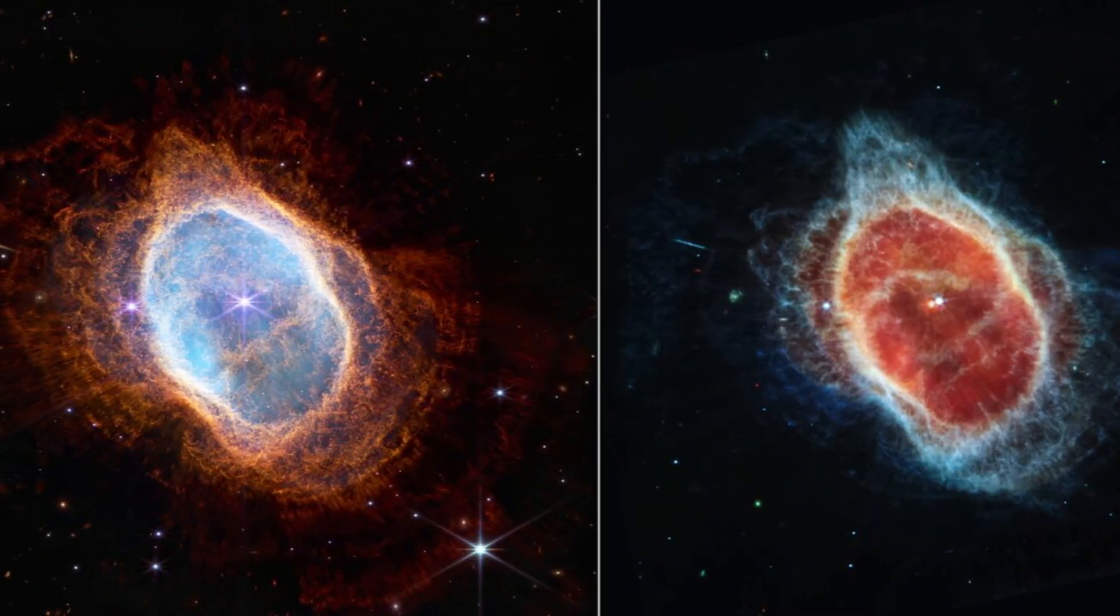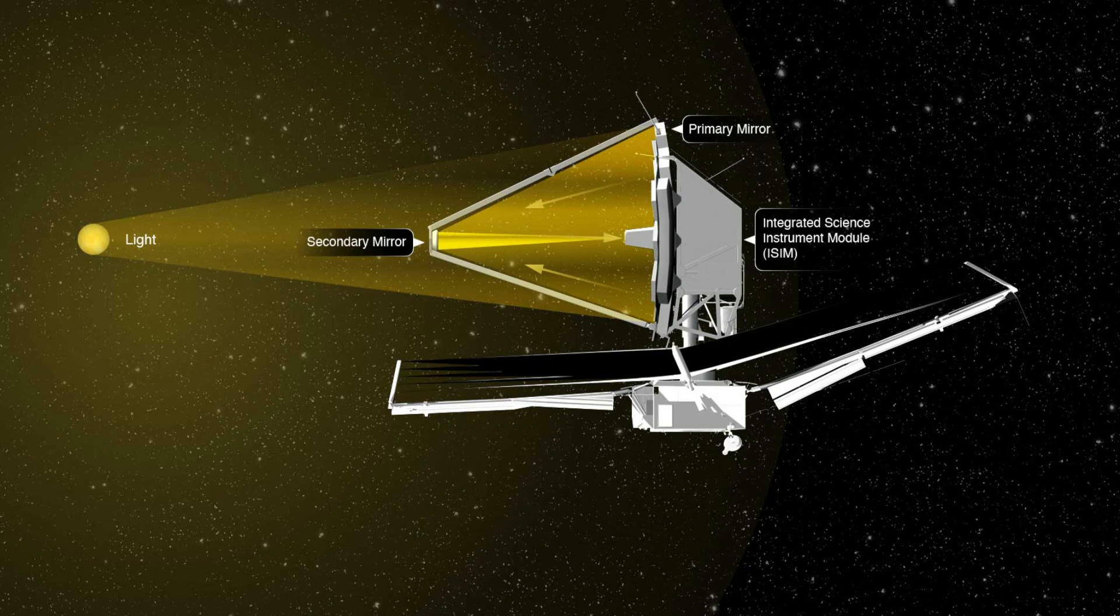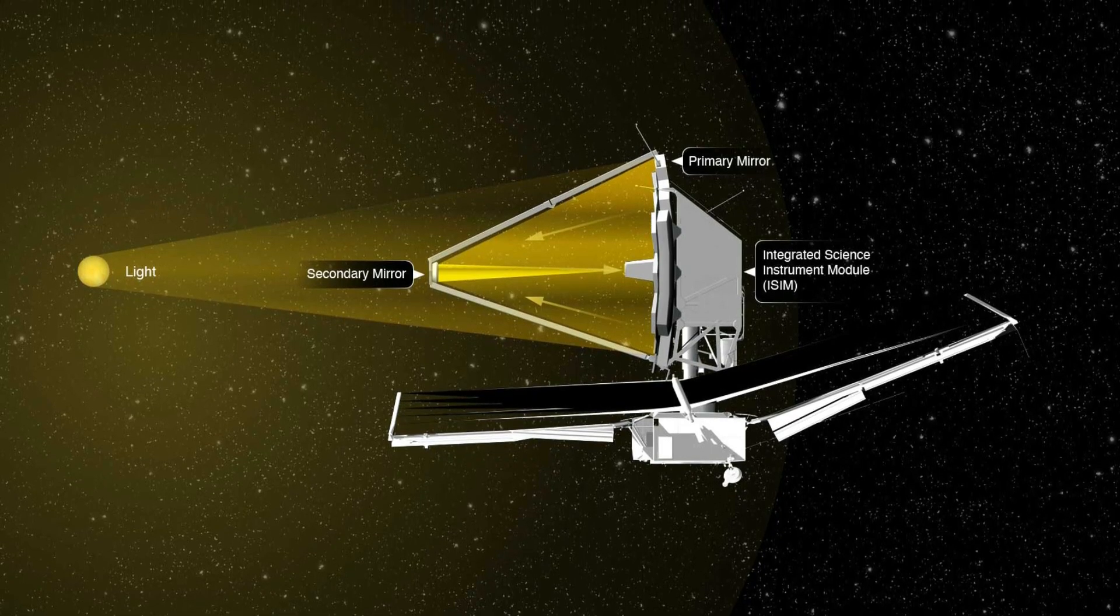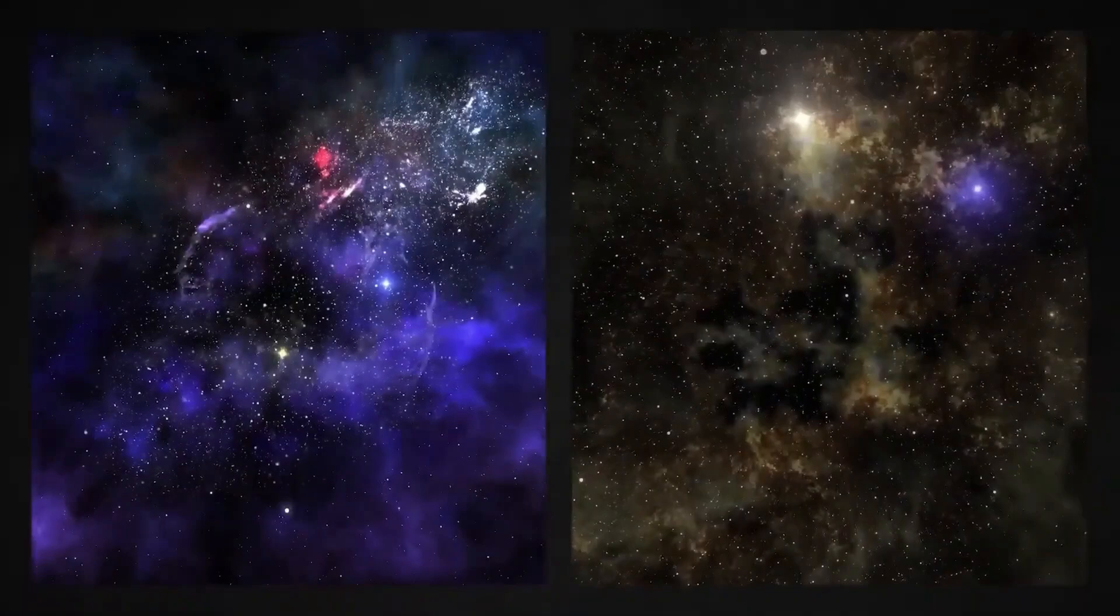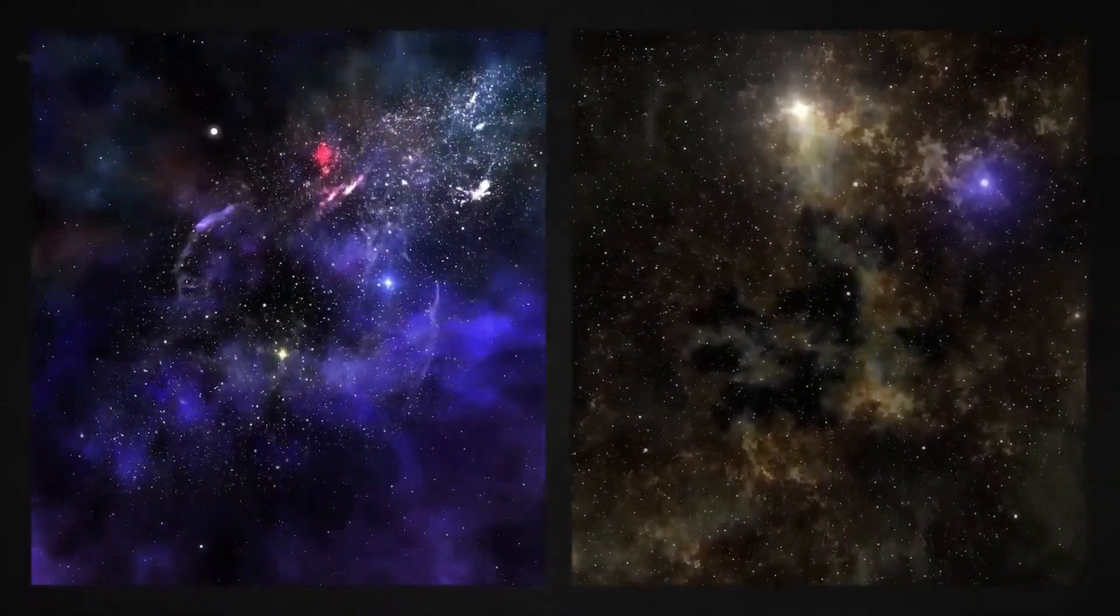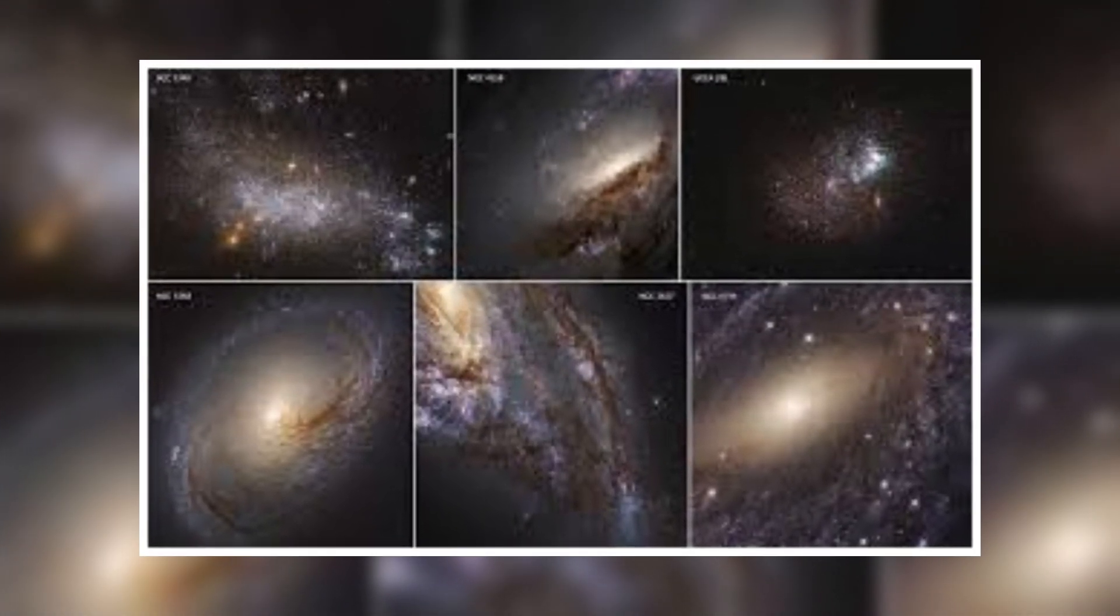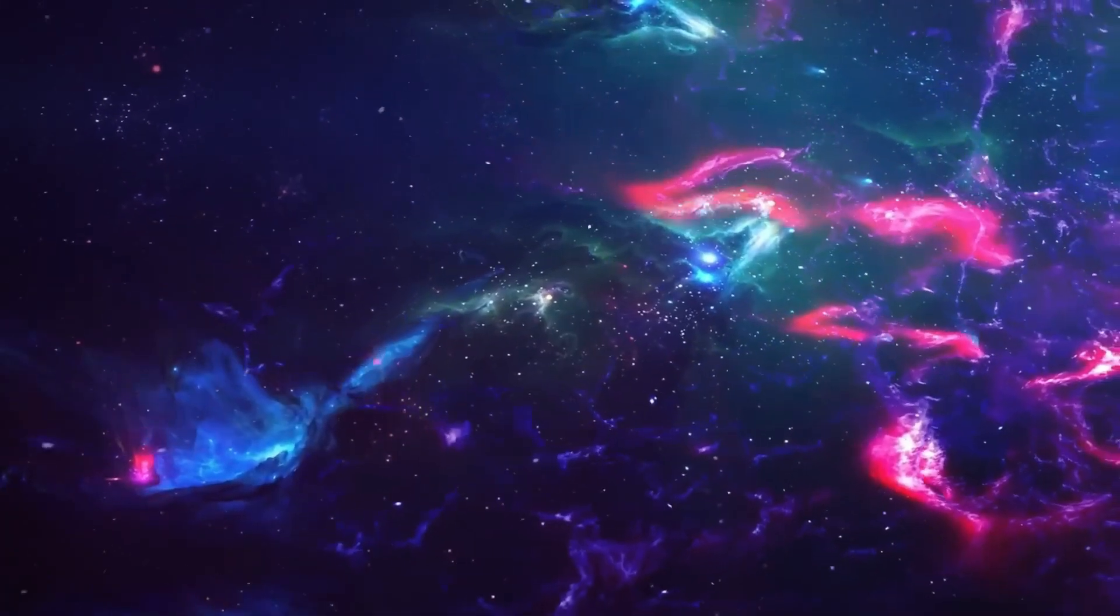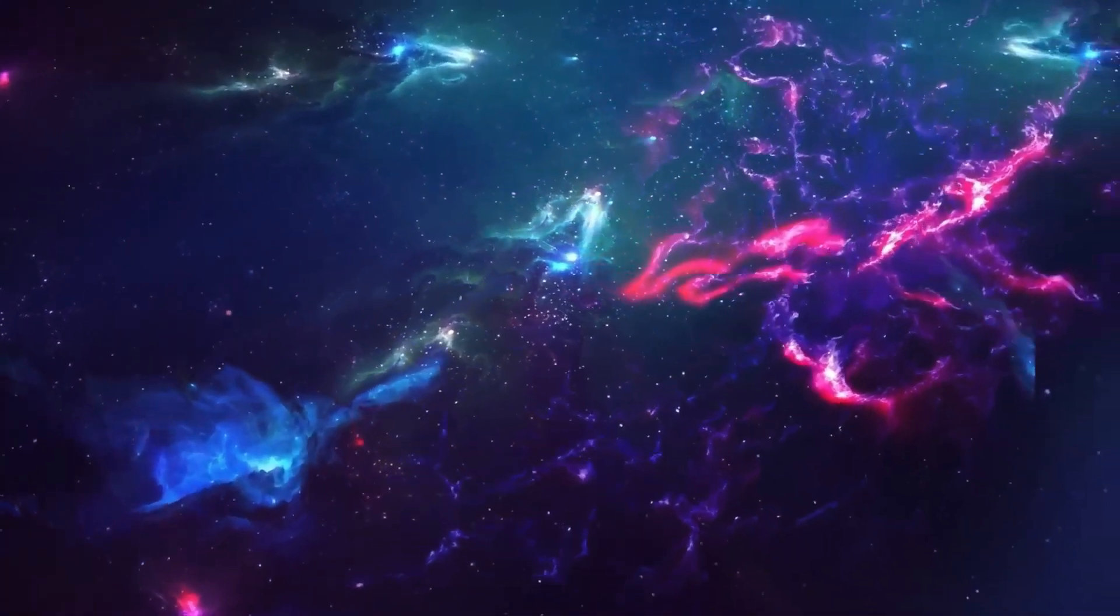Every picture that Webb has sent back from the early universe is stunning. Tyson says that the telescope was built specifically to pick up infrared light. There was a hole in the fabric of space and time that kept everything on Earth from getting good information from the early universe. This is because UV light is released when stars and galaxies are being formed. But as the light waves move through space that has been expanding since the Big Bang, they get longer.